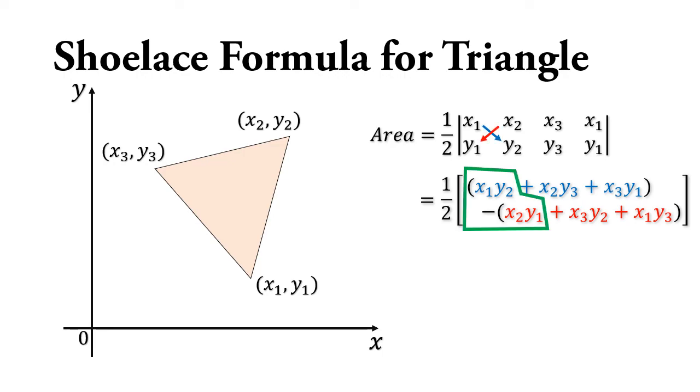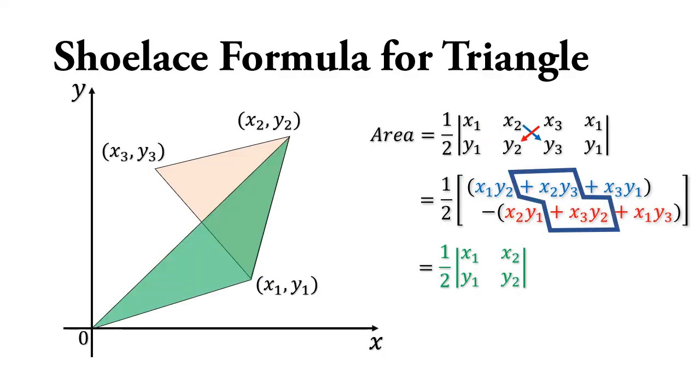The first one, if you look at what's outlined in the green box, that's the determinant of the matrix X1, X2, Y1, Y2 and that will give us the area of this green triangle. The second one, outlined with the blue box, that's the determinant formula for this matrix X2, X3, Y2, Y3 and that will give us the area of this blue triangle.